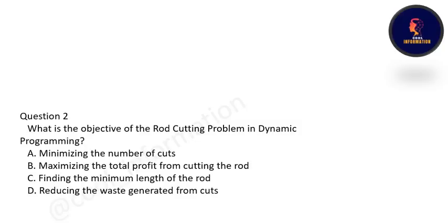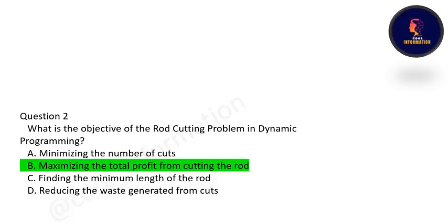Next question: what is the objective of the rod cutting problem in DP? Is it minimizing the number of cuts, maximizing the total profit from cutting the rods, finding the minimum length of the rod, or reducing the waste generated from cuts? The correct option is B — maximizing the total profit from cutting the rods.